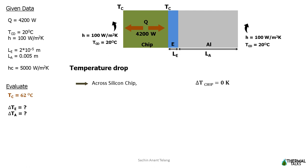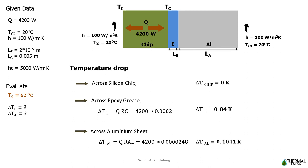So let us find out what is the temperature drop across silicon chip. It is zero because the entire chip is maintained at constant temperature, so there is no temperature difference. Across epoxy grease, delta Te equals Q into Rc, that is 0.84 Kelvin, and across aluminum sheet is 0.1041 Kelvin.